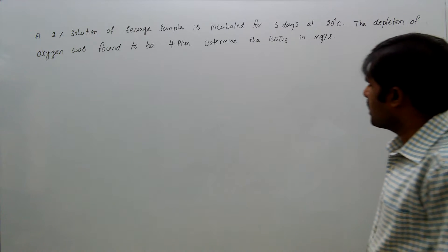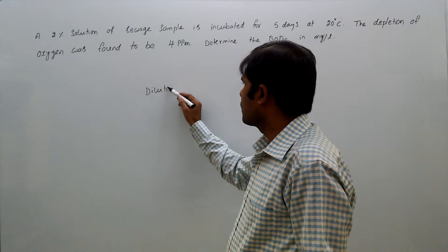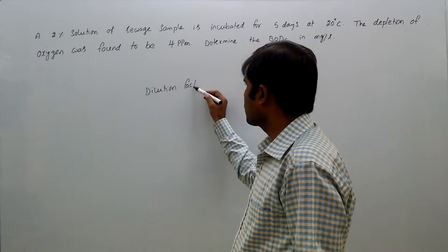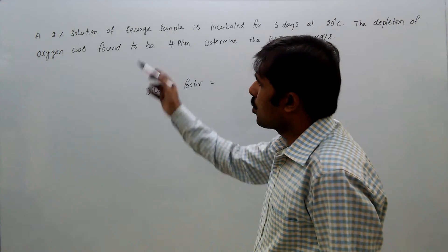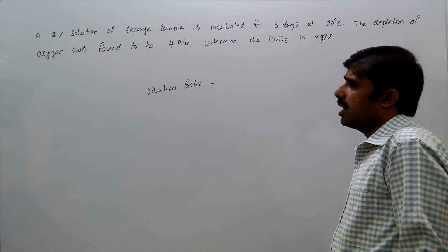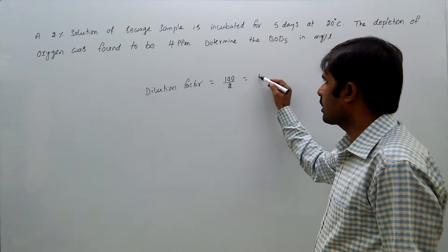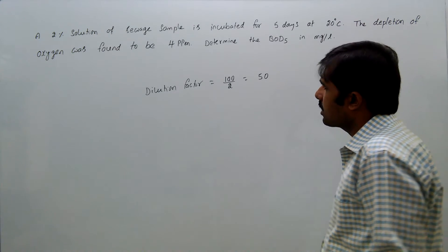Here, depletion means initial BOD minus final BOD. The dilution factor is 2%, which means 2 ml of sample in 100 ml of diluted sample, so 100 divided by 2 equals 50. The dilution factor is 50.